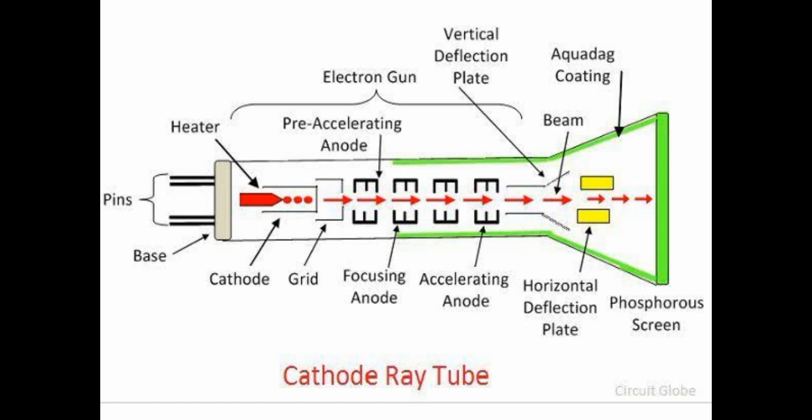This is a diagram. First, you can see two pins are connected, which is called the base. Further, the heater is connected to the cathode, then the grid, and further are the focusing anodes. Above these is the pre-accelerating anode, which is also called the electron gun. Further, we have accelerating anodes, horizontal deflection plates, phosphorus screens, and at the top there is the beam and aquadag coating, which is called the vertical deflection plate.